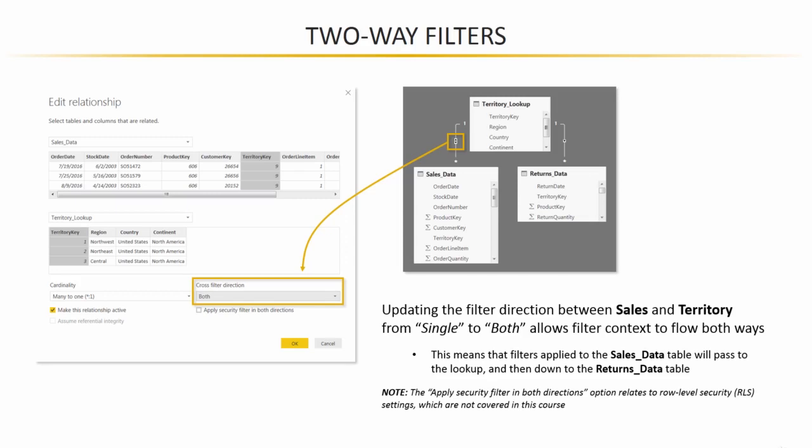What that means is that filter context could flow from the territory lookup down to the sales data, just like normal, but it could also flow from the sales data up to the territory lookup and then from there down to returns. So what we'll see now is that we can control and filter returns data using filter context from within the sales data table, which is something that we could not do using the one-directional filters in the last lecture.